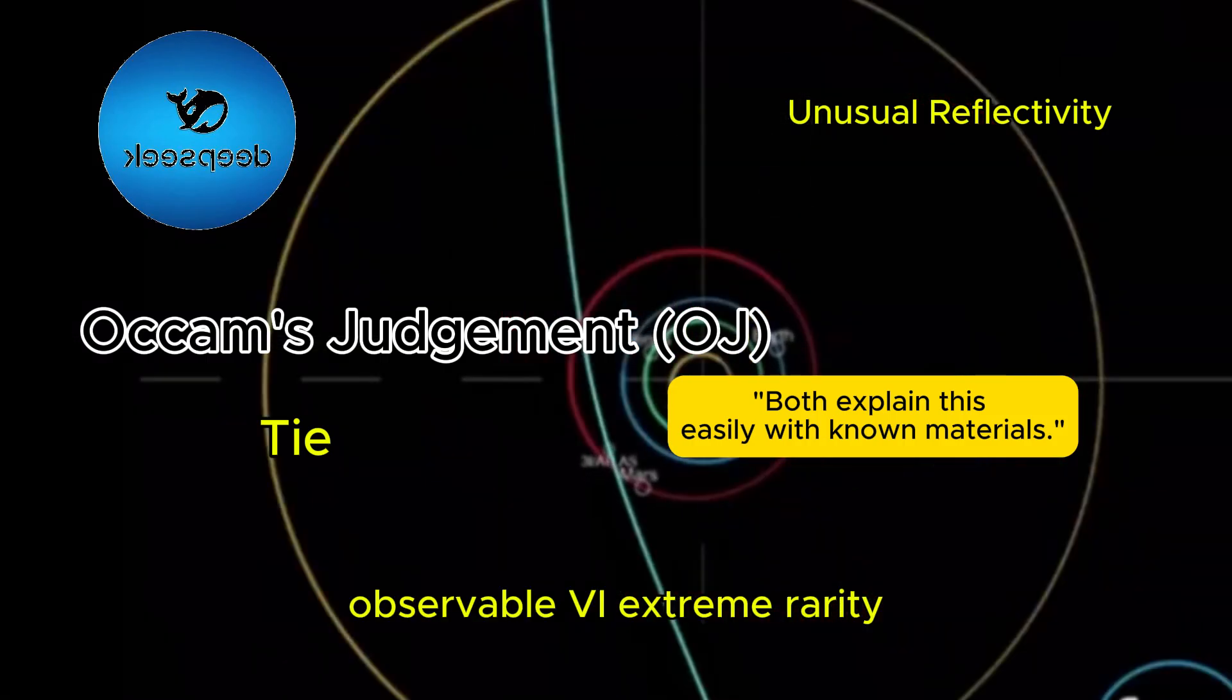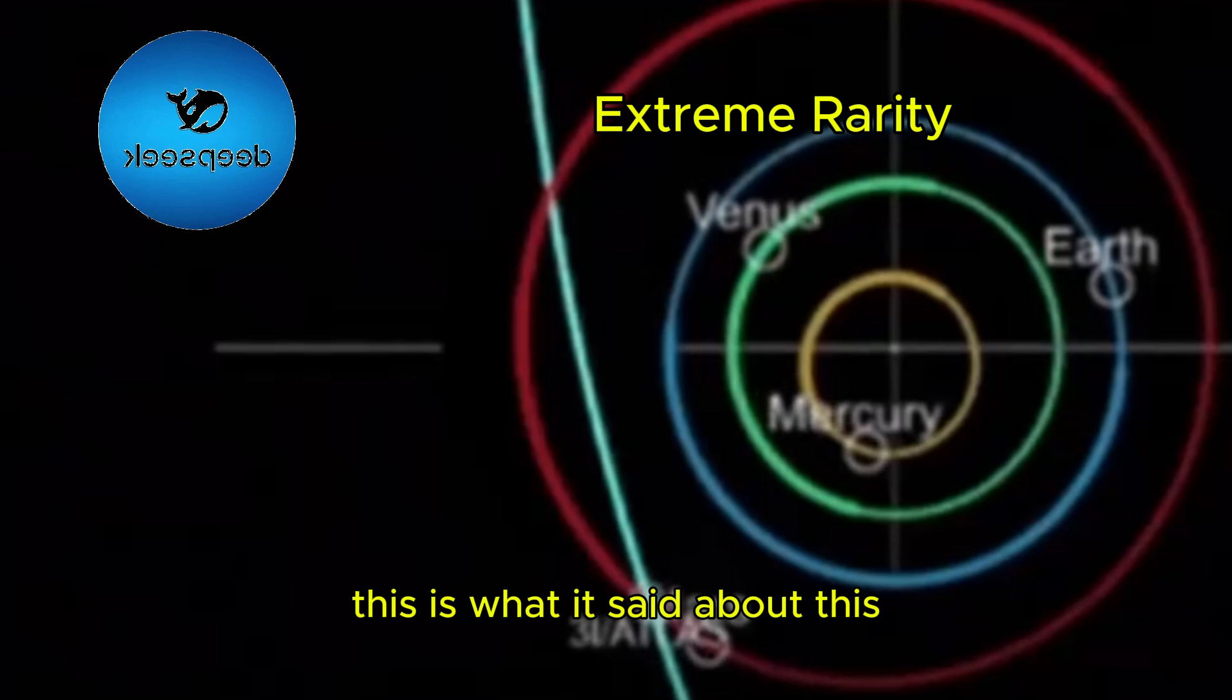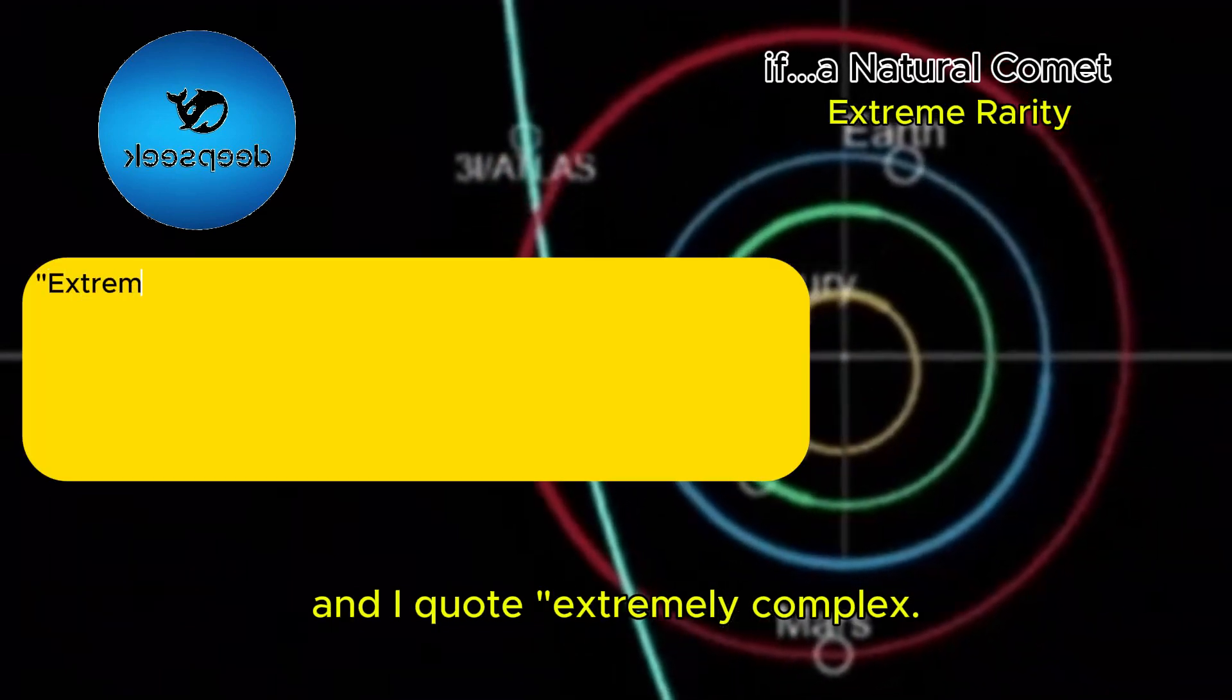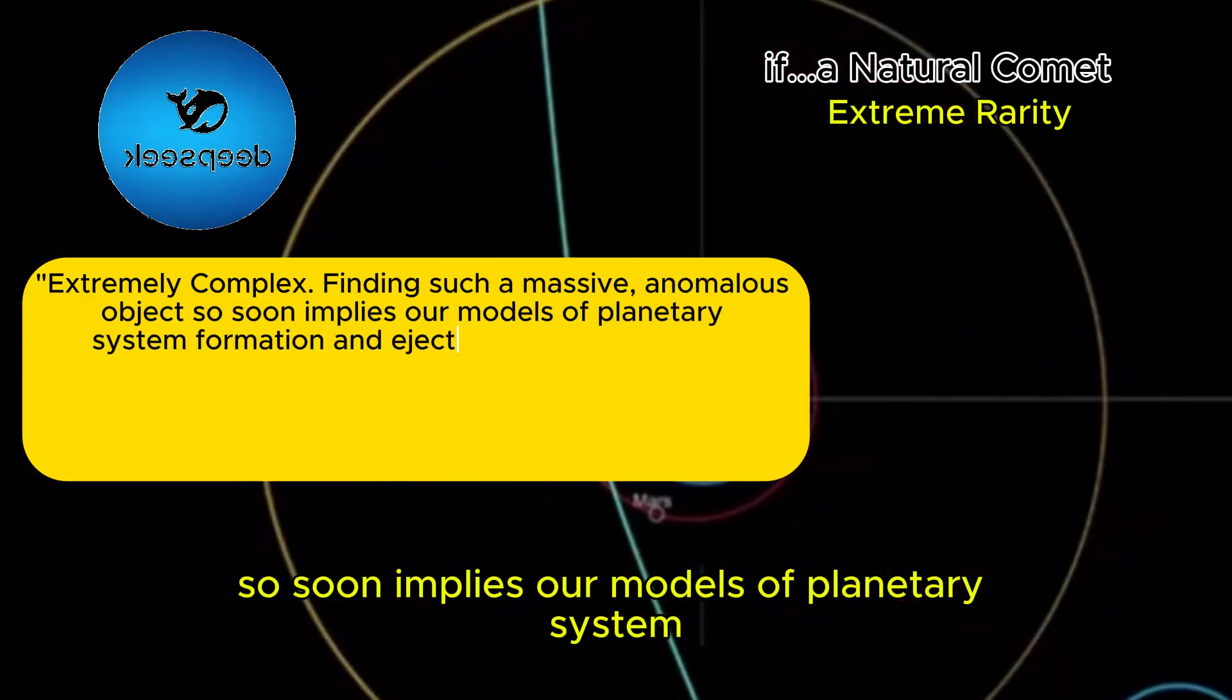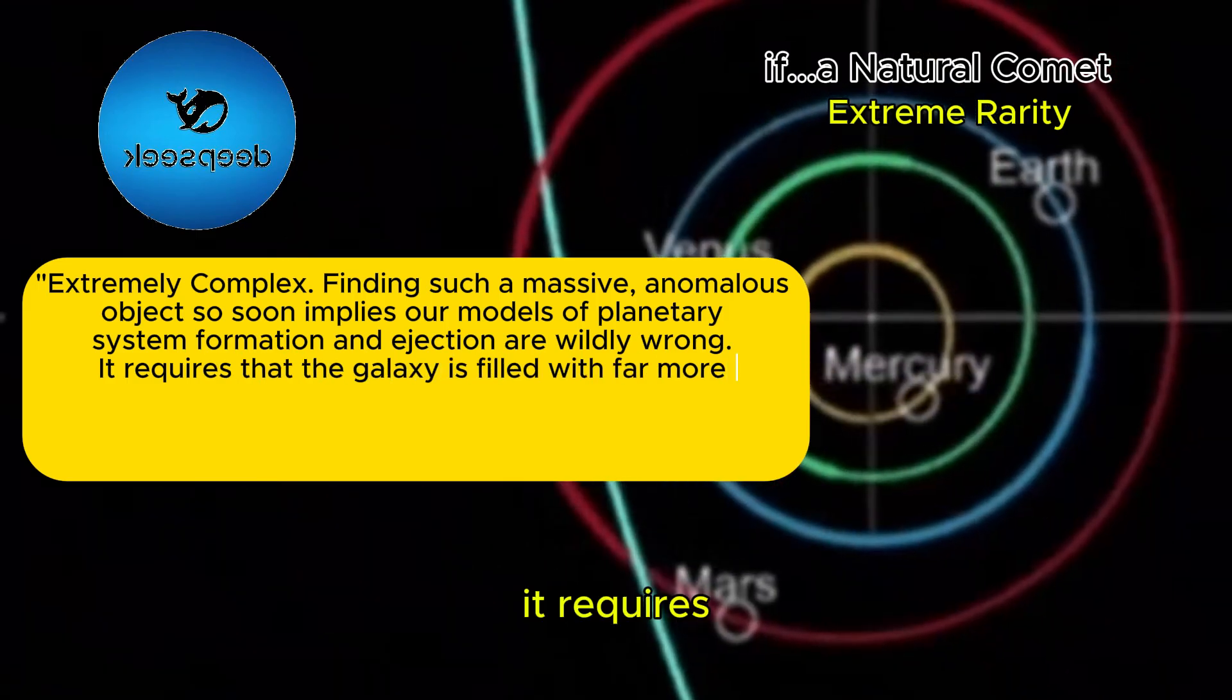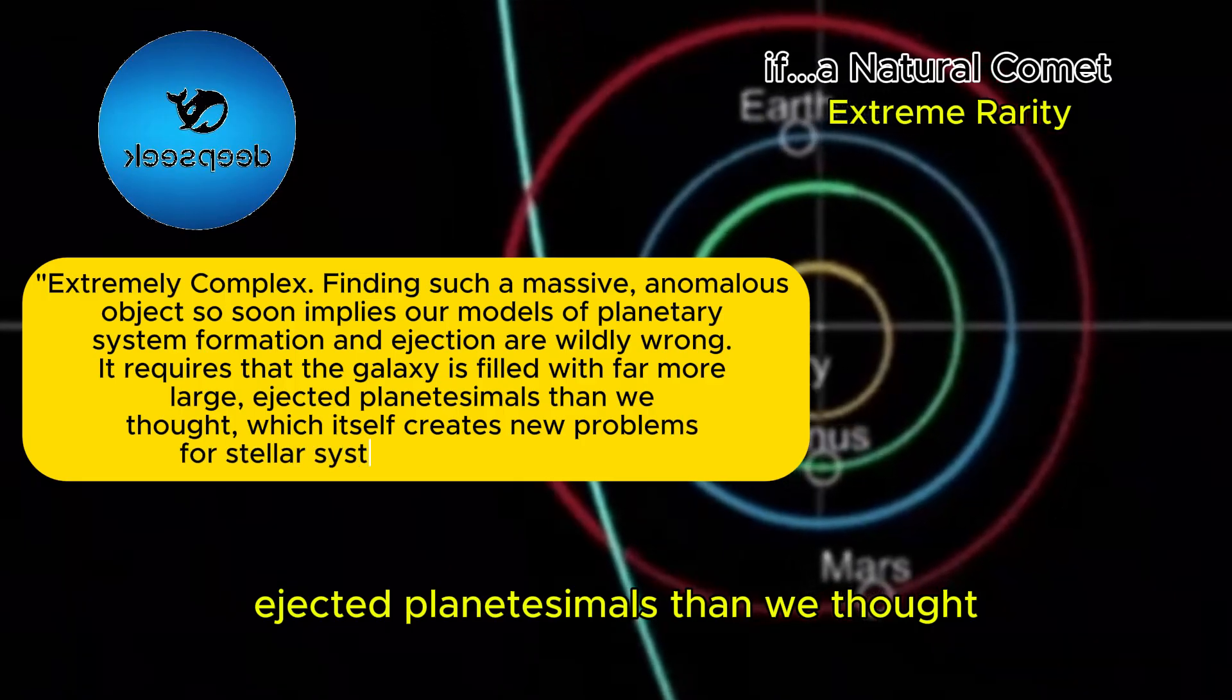Observable 6: Extreme Rarity. This is what it said about this under natural comet hypothesis, quote: extremely complex. Finding such a massive, anomalous object so soon implies our models of planetary system formation and ejection are wildly wrong. It requires that the galaxy is filled with far more large, ejected planetesimals than we thought.